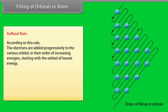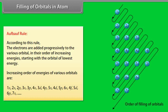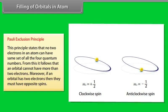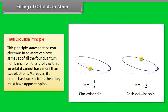Filling of orbitals in atoms — Aufbau rule: according to this rule, electrons are added progressively to the various orbitals in their order of increasing energies, starting with the orbital of lowest energy. Pauli's Exclusion Principle states that no two electrons in an atom can have the same set of all four quantum numbers. From this, it follows that an orbital cannot have more than two electrons. Moreover, if an orbital has two electrons, they must have opposite spins.